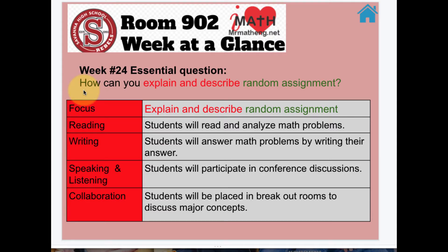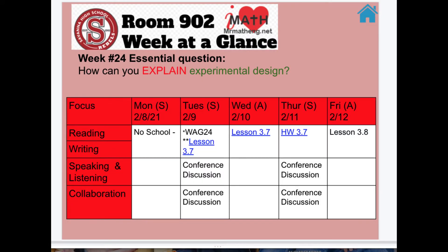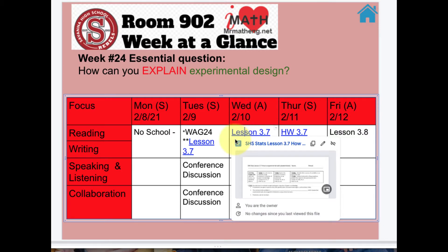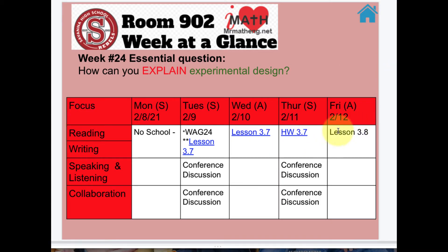Week 24 essential question: how can you explain and describe random assignment? Here is our week at a glance. No school yesterday. Today is synchronous time — we're watching Week at a Glance 24, and I just released Lesson 3.7, so you can click on it and we'll watch it in class today. Tomorrow I finish up Lesson 3.7, then Tuesday/Thursday you can work on Homework 3.7, and by Friday I'll have released Lesson 3.8.